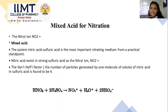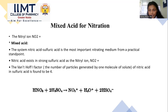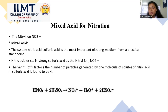For mixed acid nitration, the nitronium ion NO2+ is used as the nitrating agent. The system of nitric acid and sulfuric acid is mostly used as the nitrating medium. In strong sulfuric acid, nitric acid exists as the nitronium ion. It is formed as follows: HNO3 + 2H2SO4 → NO2+ + H3O+ + 2HSO4−.